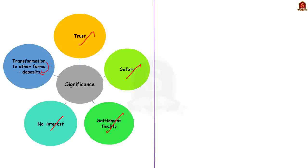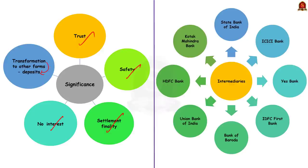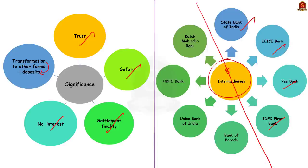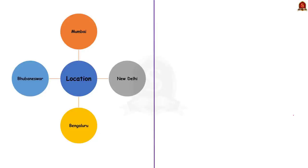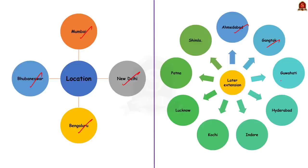Eight banks have been identified for phase-wise participation. The first phase will begin with four banks: State Bank of India, ICICI Bank, Yes Bank, and IDFC First Bank. Four more banks — Bank of Baroda, Union Bank of India, HDFC Bank and Kotak Mahindra Bank — will join subsequently. The pilot will initially cover four cities: Mumbai, New Delhi, Bengaluru and Bhubaneswar, later extending to Ahmedabad, Gangtok, Guwahati, Hyderabad, Indore, Kochi, Lucknow, Patna and Shimla.